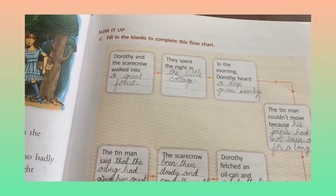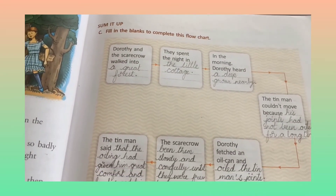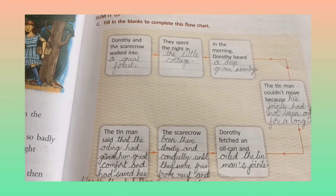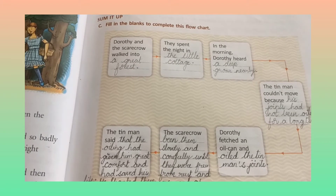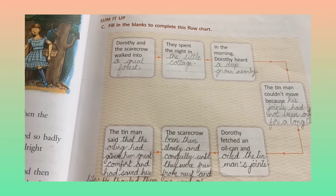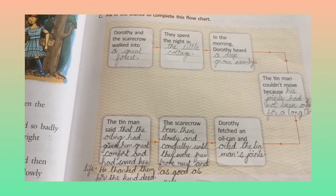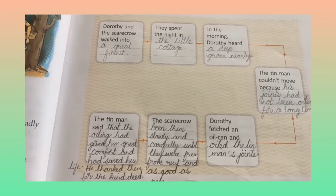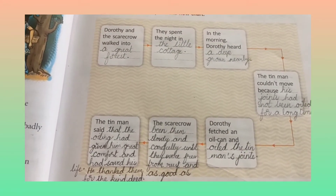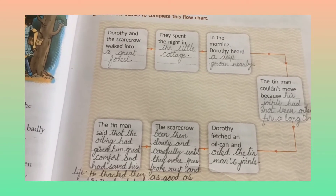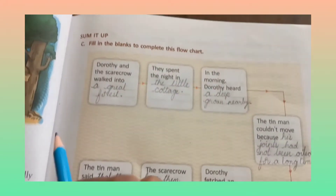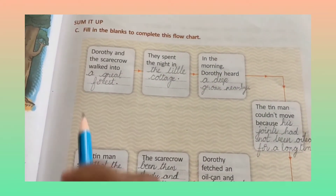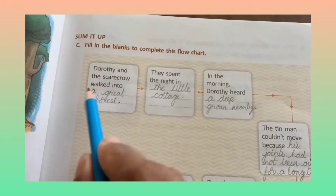Very good morning, children. Yesterday we finished our class work — that means we finished our question and answers. Today we are going to write our textual exercises. Now open your textbook page number 57.